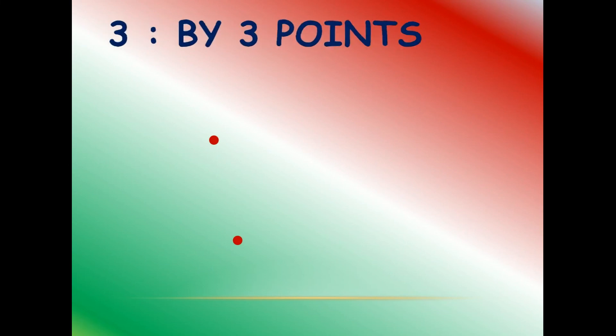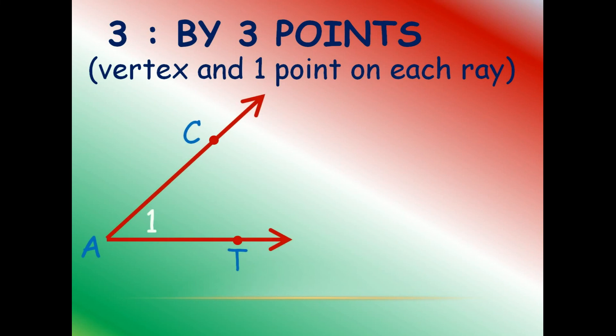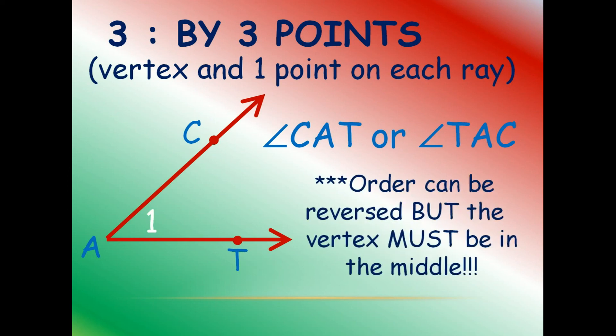Now, by three points. That means, by using one vertex and one point on each ray. Here, A is the vertex. C and T are the points. So, we can read the angle as angle C, A, T or angle T, A, C. Order can be reversed, but the vertex must be in the middle.